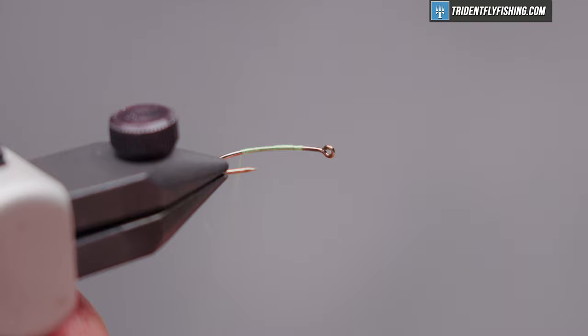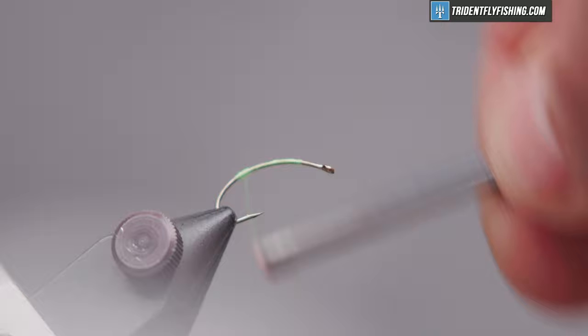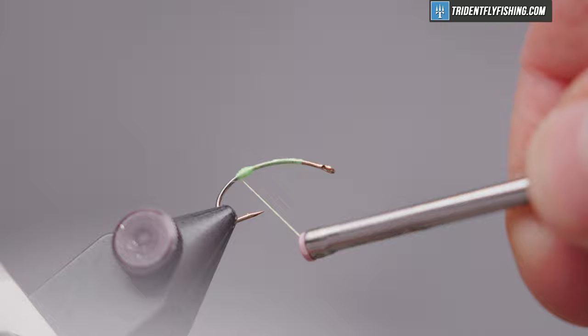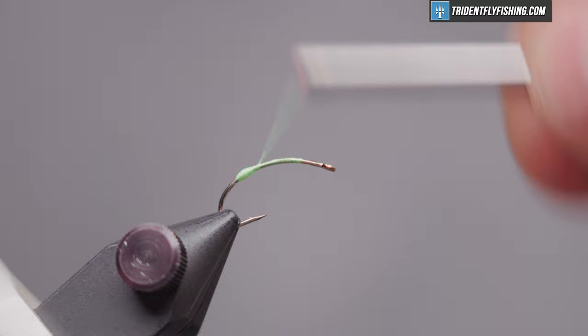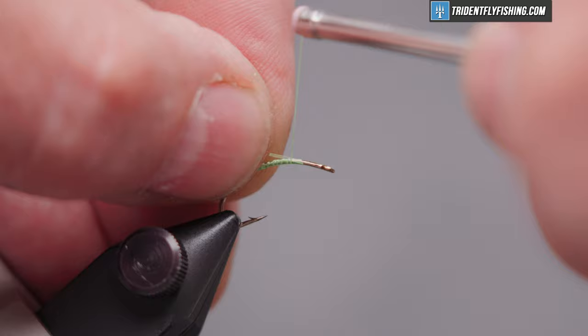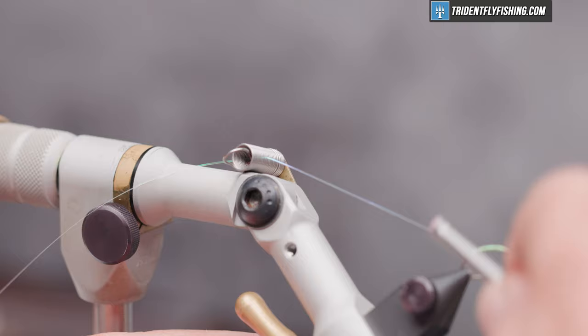A little counter-clockwise spin to flatten the thread out and start to build up a ball here. And once we've got the egg sack formed, we can tie in our next material. That's just going to be some single strand of flashabou. And we'll just run that back to where the start of that egg sack is. Then in my material clip to get it out of our way.